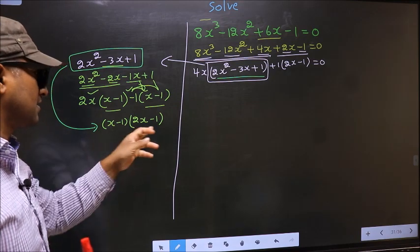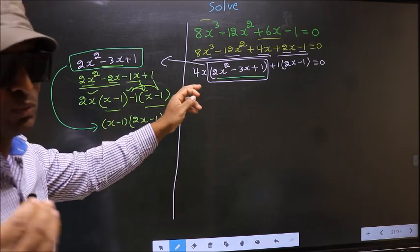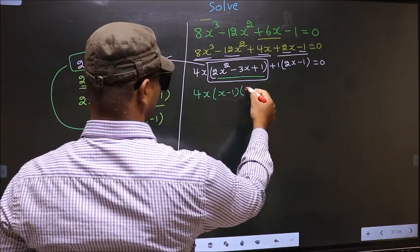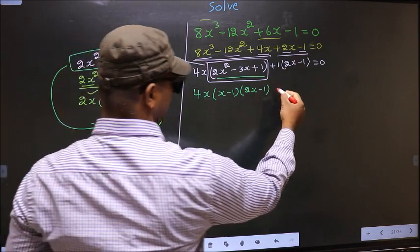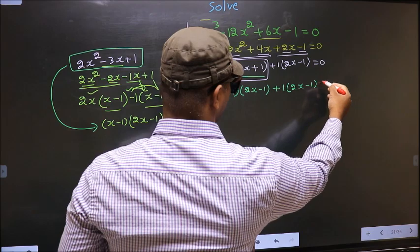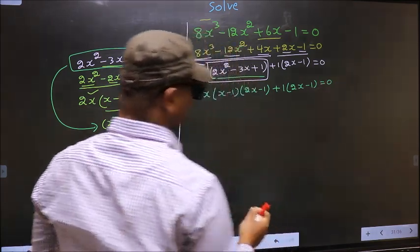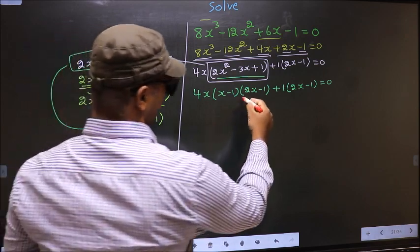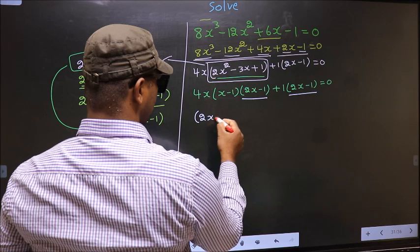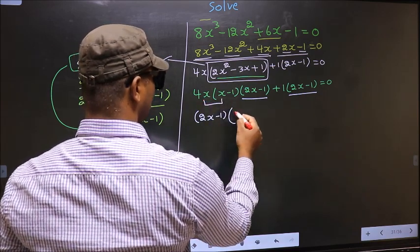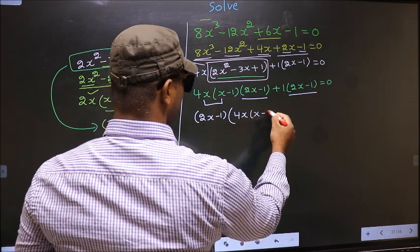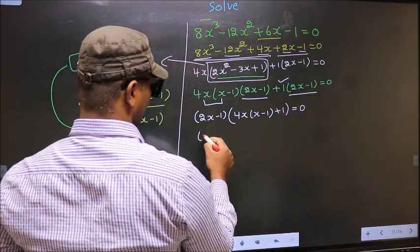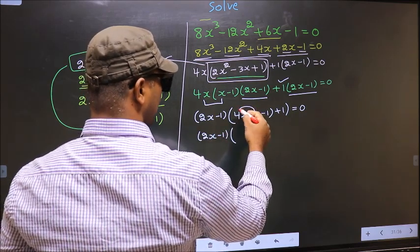Now in place of this quadratic we should replace this factored form. So the equation changes to 4x times (x minus 1) times (2x minus 1), plus 1 times (2x minus 1) equal to 0. Now expanding — 2x minus 1 times the bracket — you get 4x² minus 4x plus 1 equal to 0. Now we have a quadratic here.